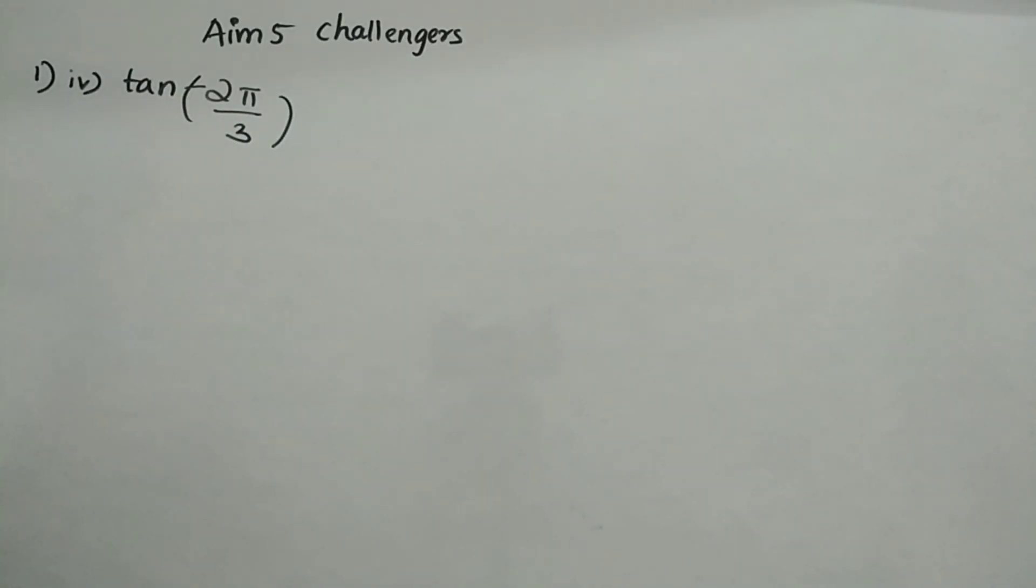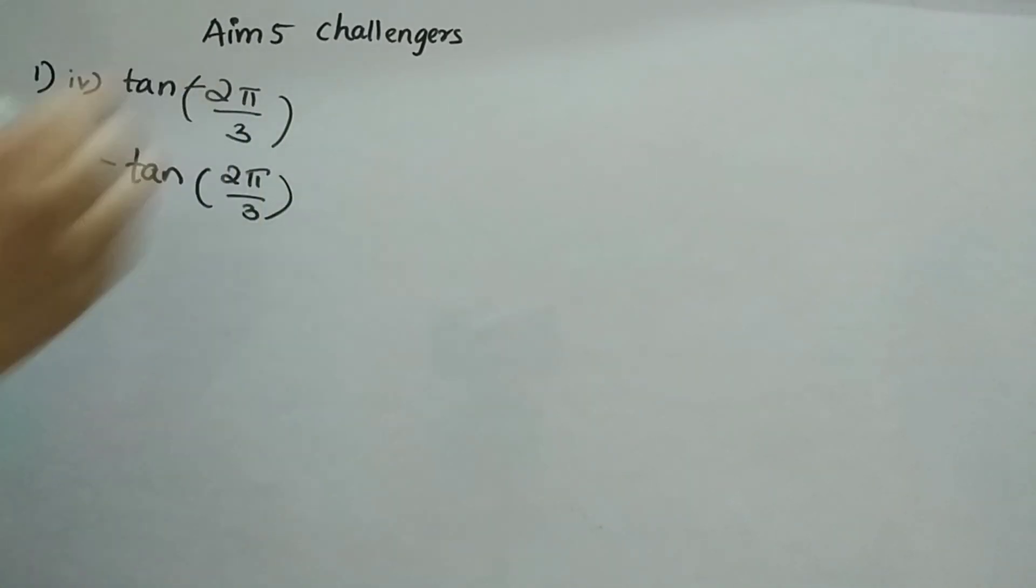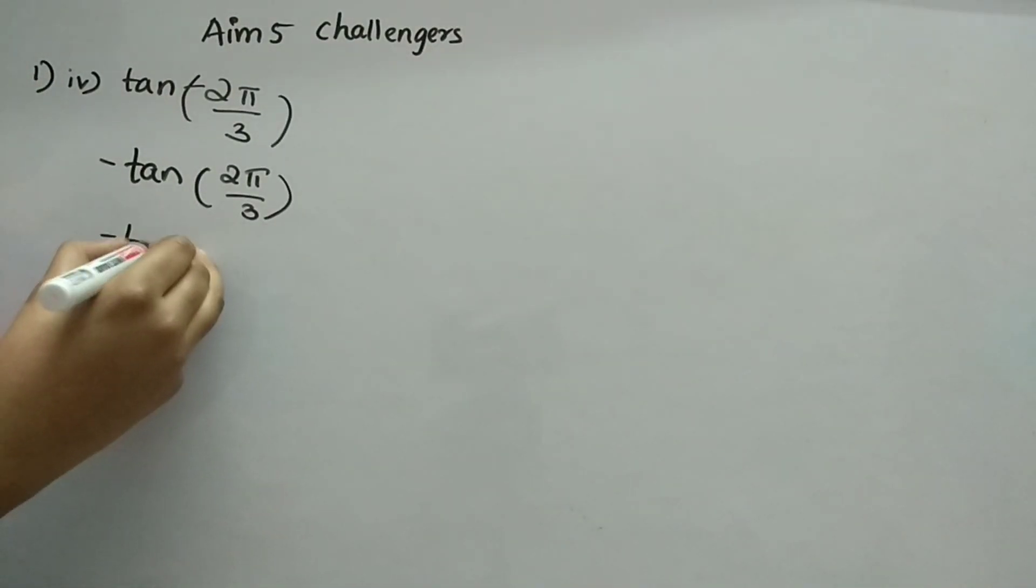This is the given question. Actually, minus is here. But, we can bring that to front. So, minus tan 2 pi by 3. Now, pi value is obviously 180 only. So, 2 into 180 by 3.